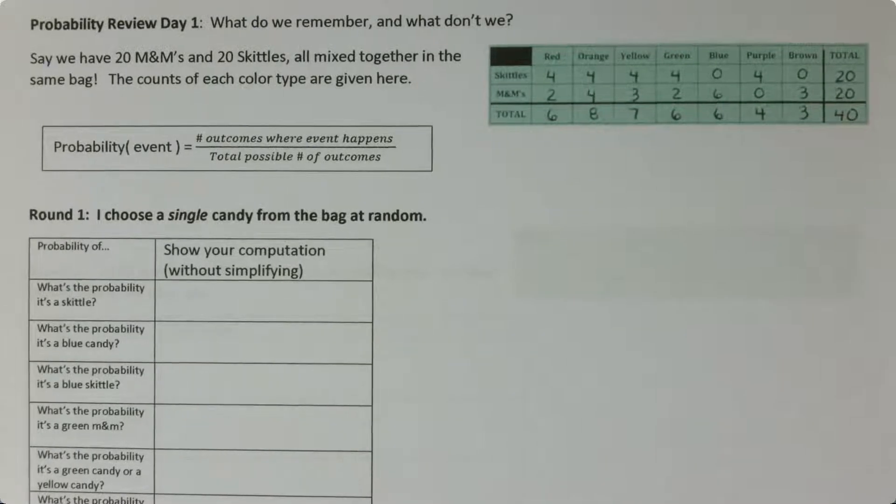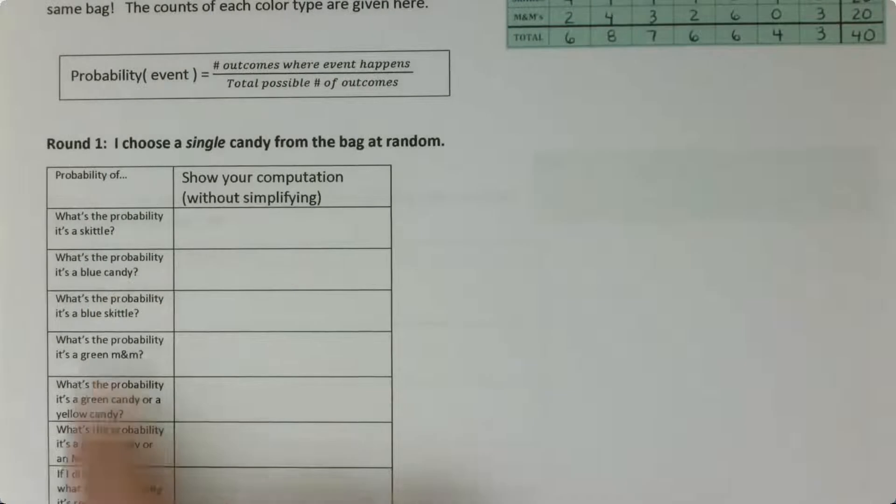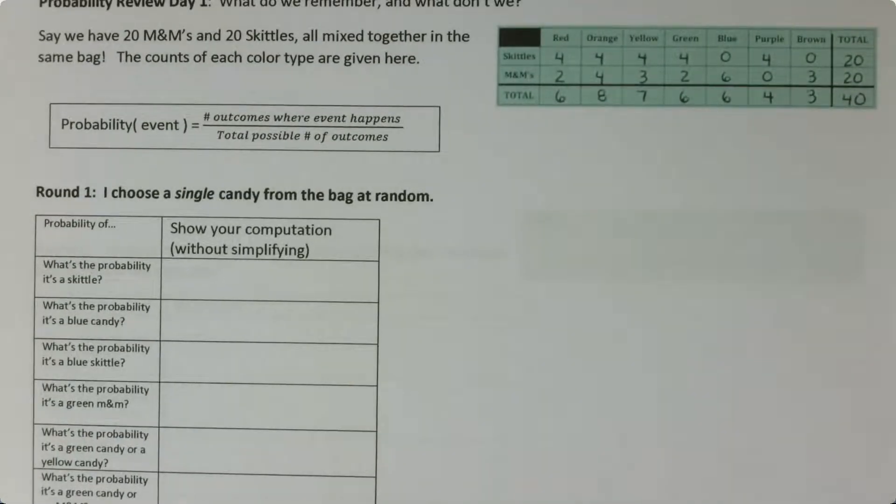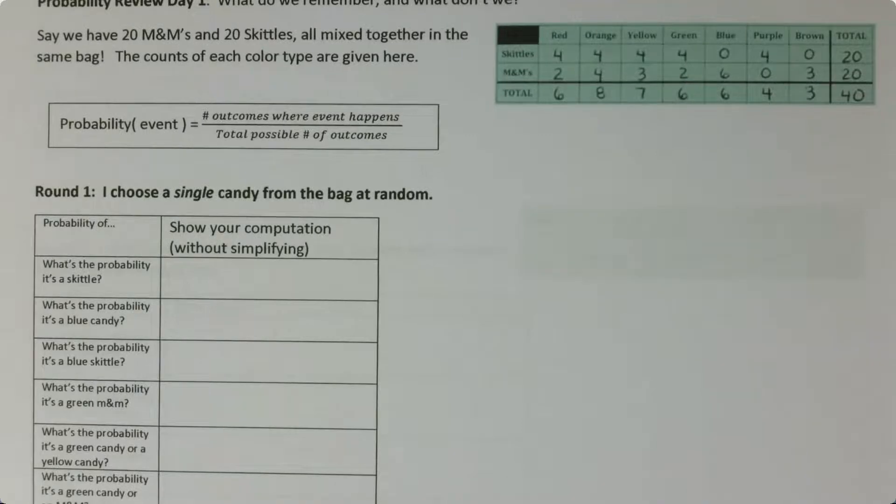So what's an event? An event might be drawing a blue candy, or it might be drawing a green or a yellow candy, or it might be drawing a red M&M. And later when we draw more than one thing at a time, it might be drawing exactly three M&Ms out of five candies total, that sort of thing. So without further ado, let's jump in.